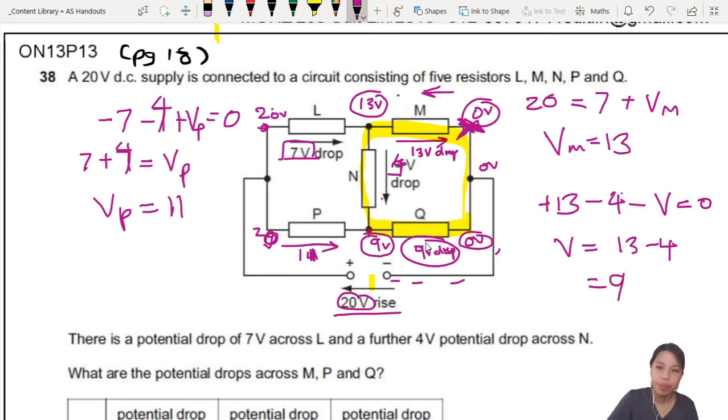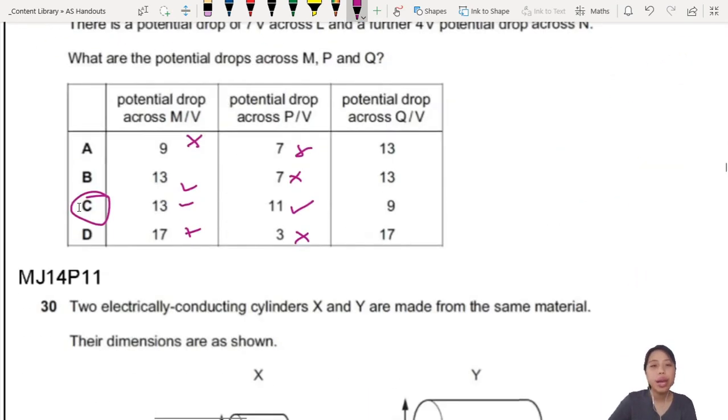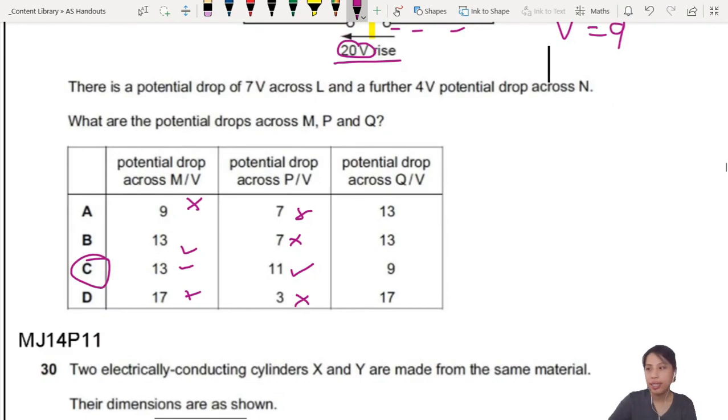Yep. 9. There we go. So, many ways to do it. You can think of potential, potential, or dropping, dropping, dropping. And that's it. So, yeah. The answer is C. Ding, ding, ding, ding.